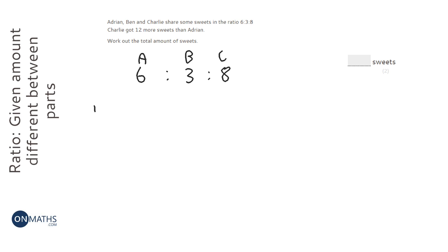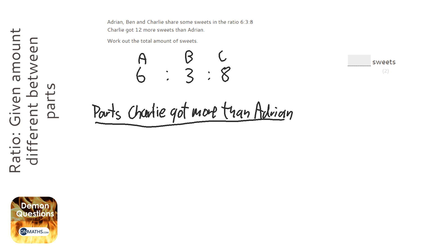Well, first of all, let's have a look and see how many more parts that Charlie got more than Adrian. OK, so he got 8 takeaway 6 is 2. So he got 2 more parts.